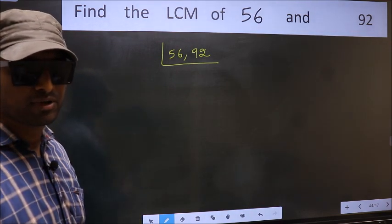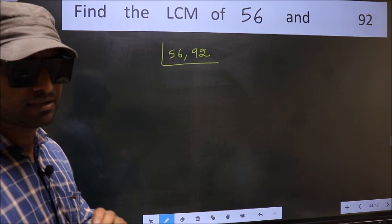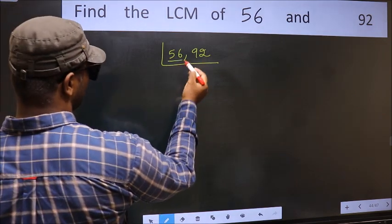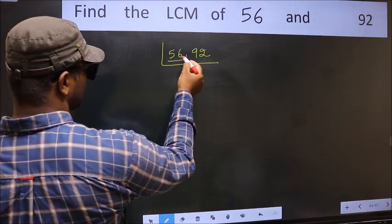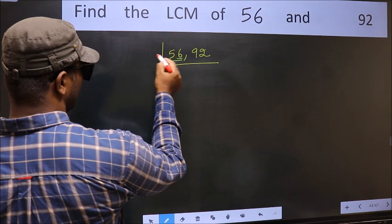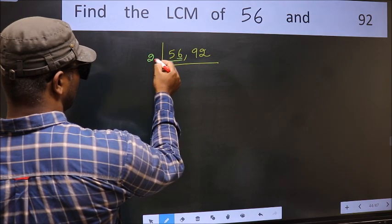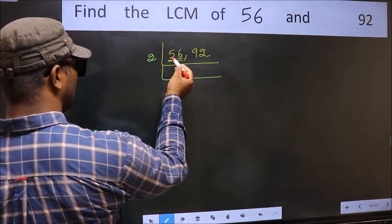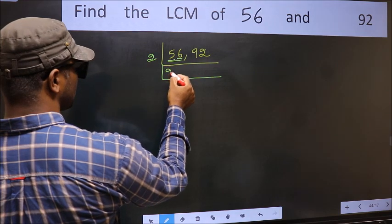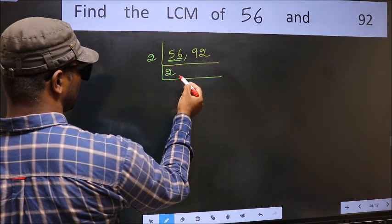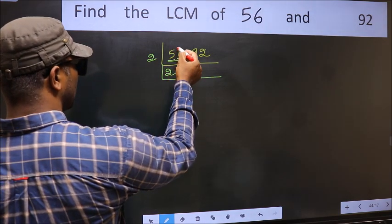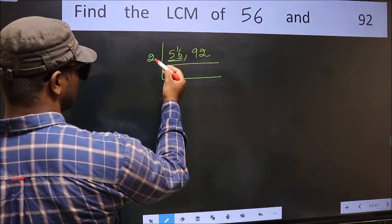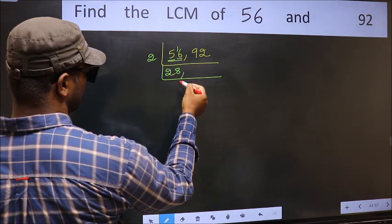Now focus on the first number, which is 56. For this number, last digit is 6 — it's divisible, so take 2. First digit 5: a number close to 5 in the 2 table is 2×2=4. 5-4=1, carry forward 16. When do we get 16 in the 2 table? 2, 8's — 16. So 56÷2=28.